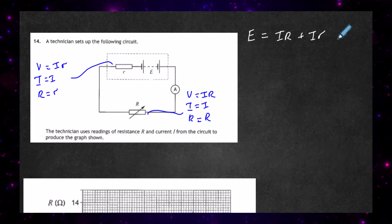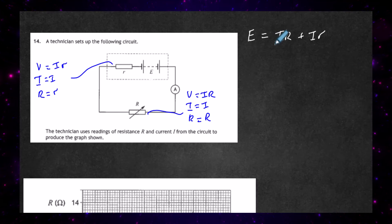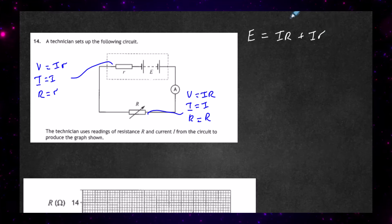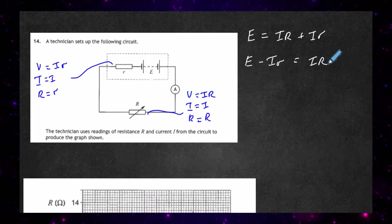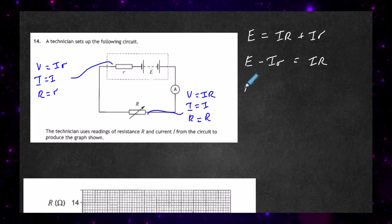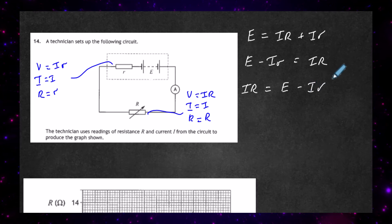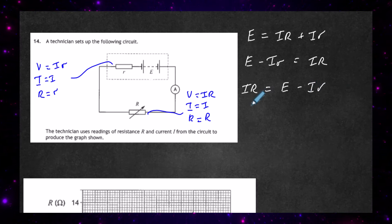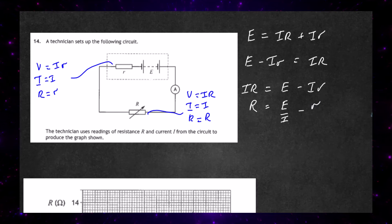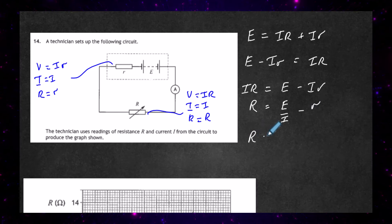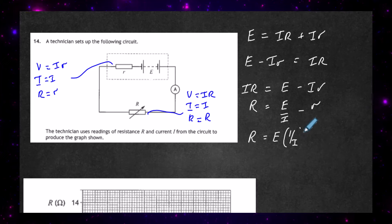Now we want to rearrange in terms of that equation. Taking I times r over to the other side gives E minus I times r equals I times R. Swapping the sides around, I times R equals E minus I times r. Dividing through by I, we get R equals E divided by I, minus r. Putting the 1/I in brackets with E in front of it, we can see where that equation comes from.